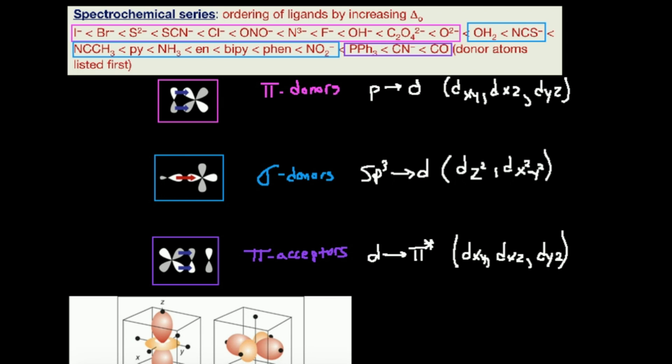We have this concept of weak field ligands and strong field ligands. The three circled in purple are going to be your strong field ligands, and for most applications there are not very many of them in inorganic chemistry — these are the three most common ones. The ones boxed in pink and blue are weak field ligands. However, weak field ligands can be divided into two groups. The ones boxed in pink are referred to as pi donors.